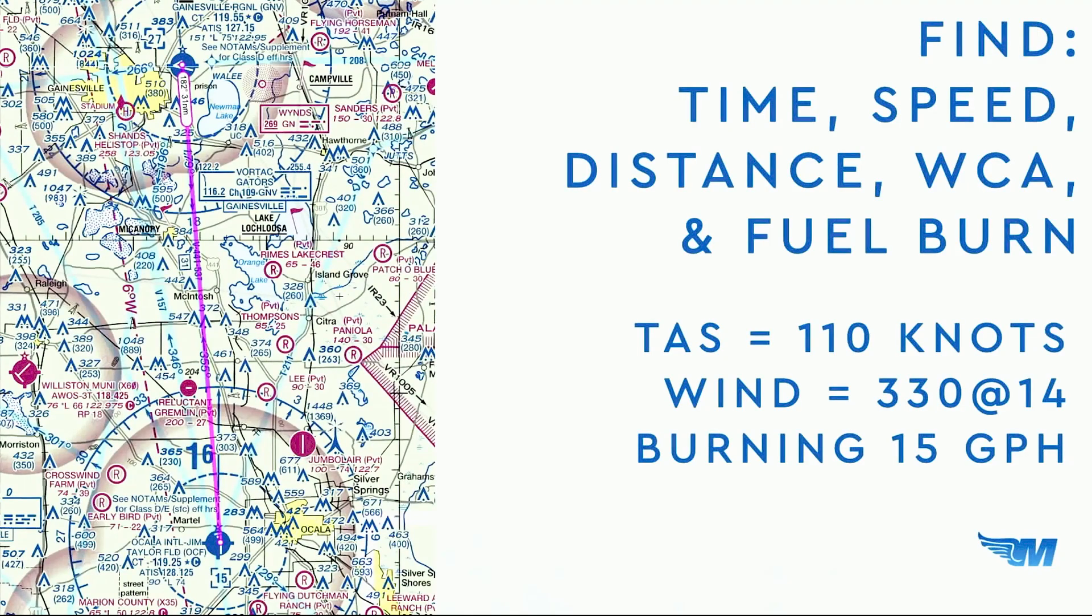Let's try another one here together. This one, a little more involved. We'll work through it together, and then I'll set you up on your own with a fun one we're going to do for competition. Let's look at this one here together. This time, I need you to find time, speed, distance. WCA is wind correction angle and fuel burn. So looking at the left-hand side of our screen, we are leaving Gainesville. We're heading for a quick hop down to Ocala. I show a 1-8-2 heading, we'll call it our true course, and 31 nautical miles. True airspeed, TAS, 110 knots. We're flying something a little bit faster, finally. Wind, the 3-3-0 at 1-4, and I'm burning 15 gallons per hour.